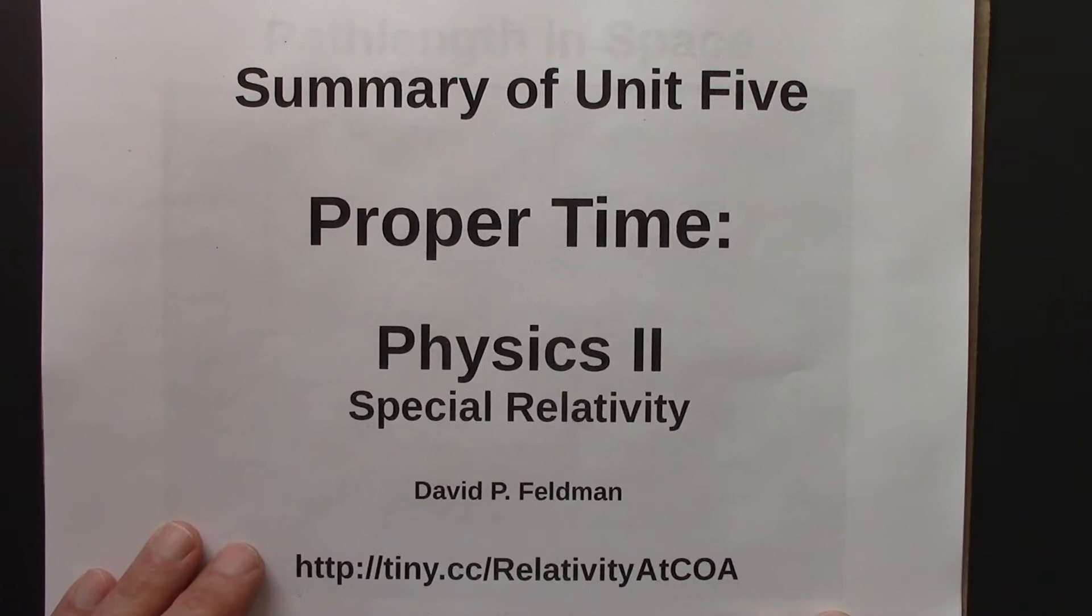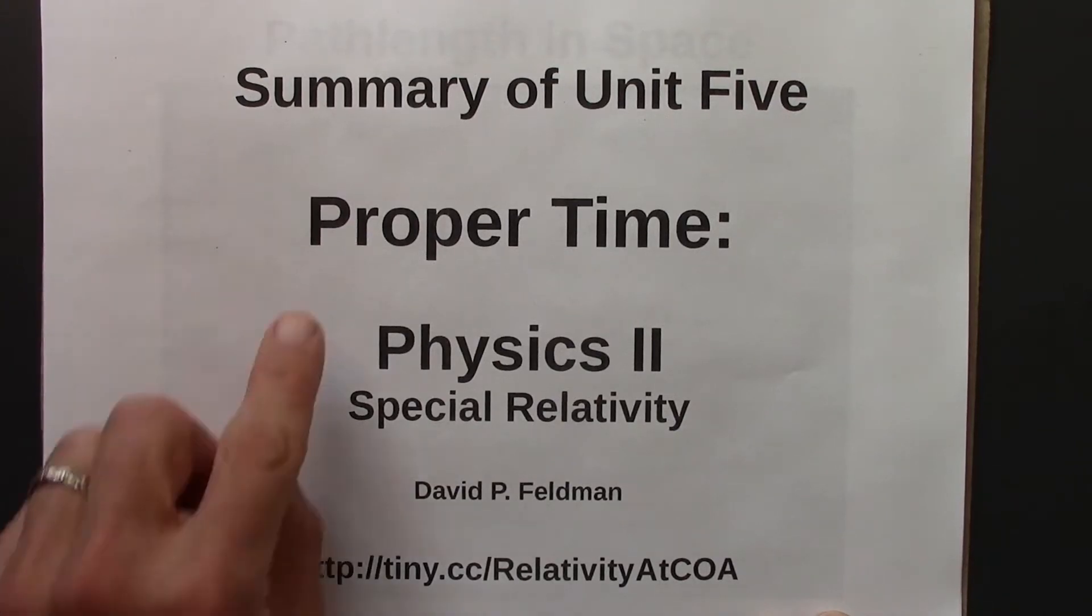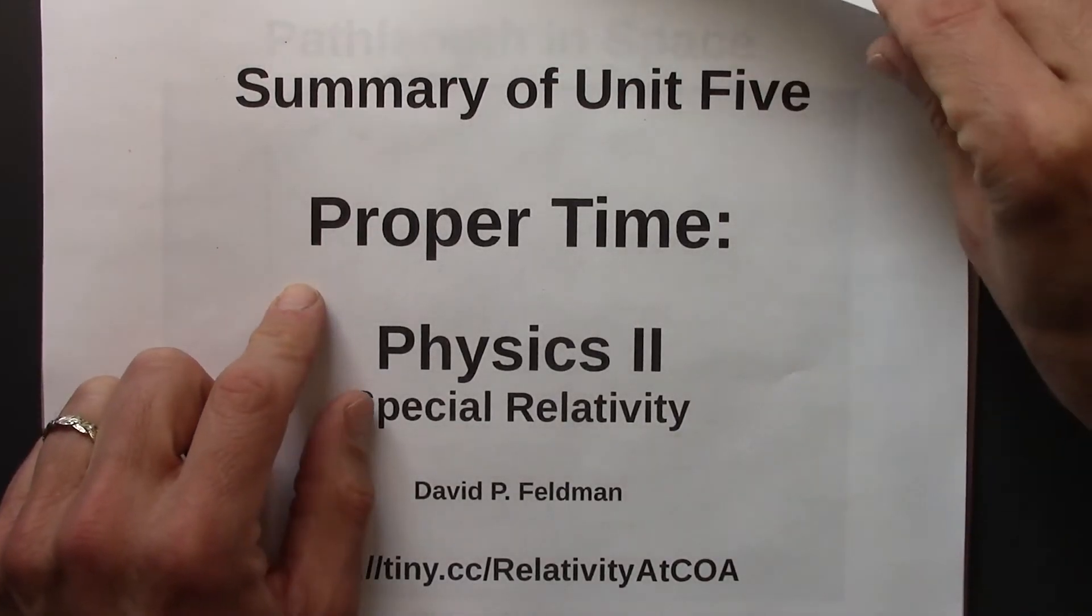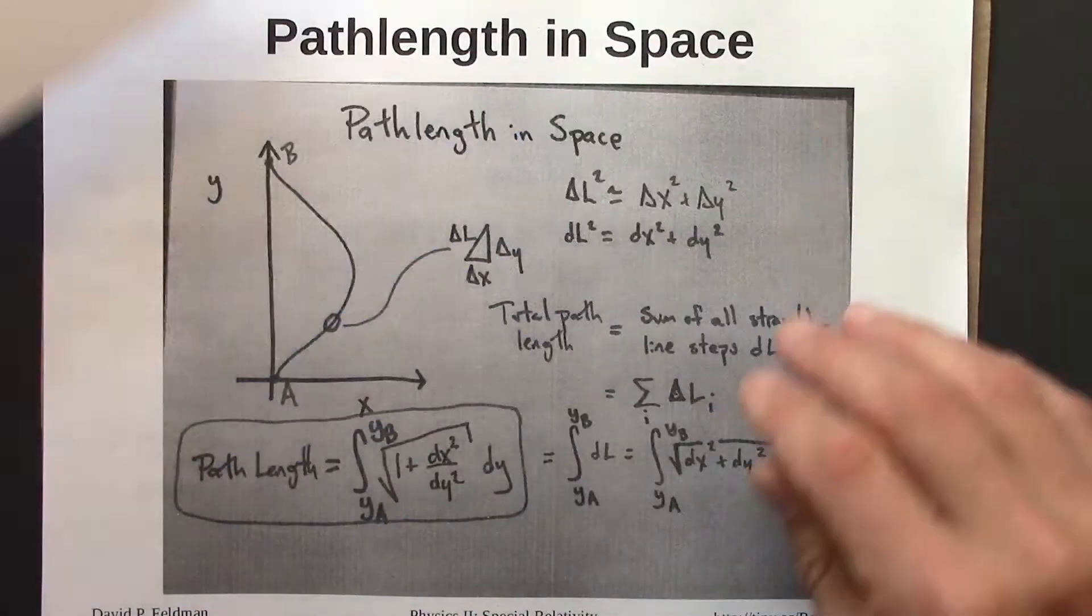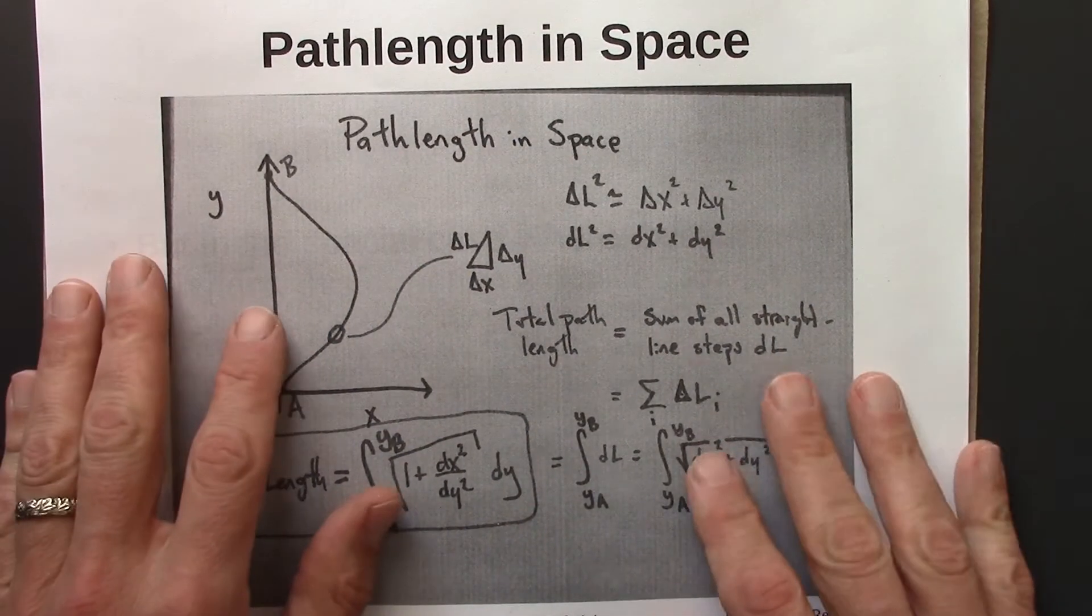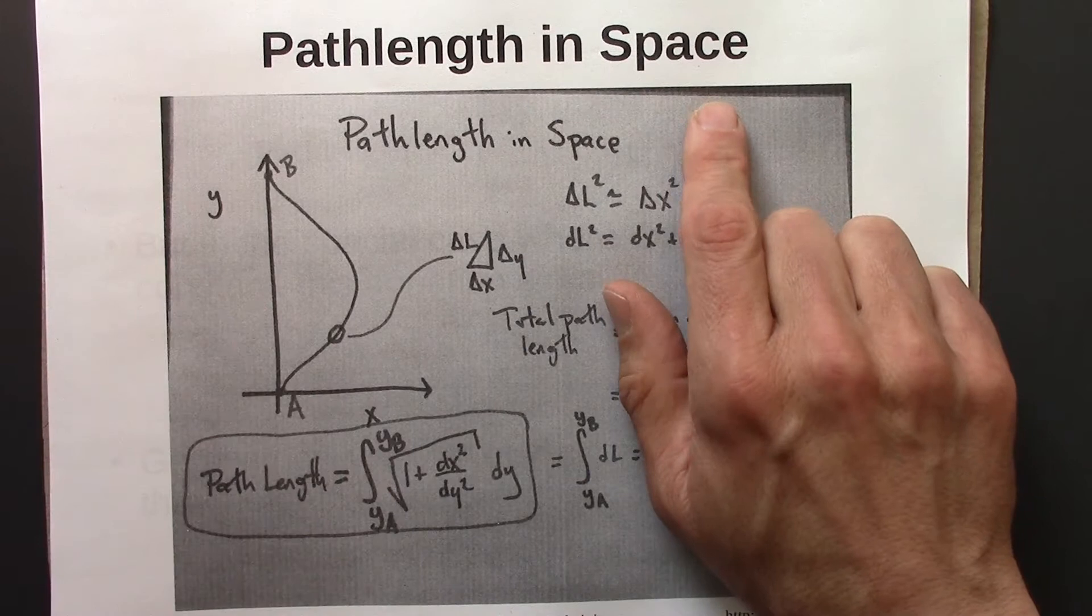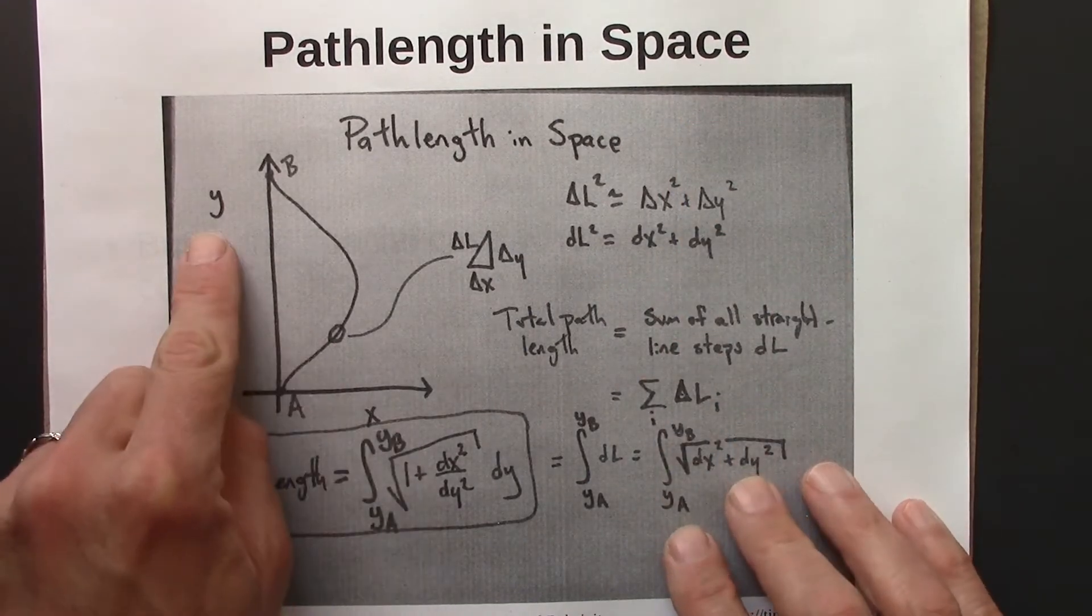So let's review what we've covered in Unit 5. Unit 5 is about proper time. We started by thinking about paths in space, not space-time, but just regular space, x and y.